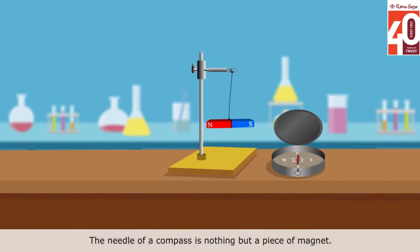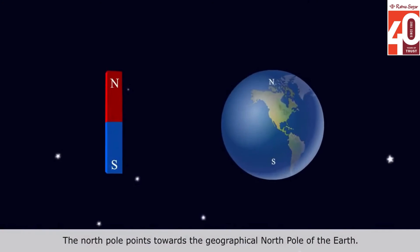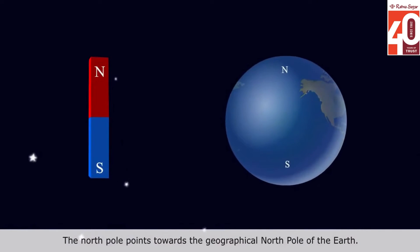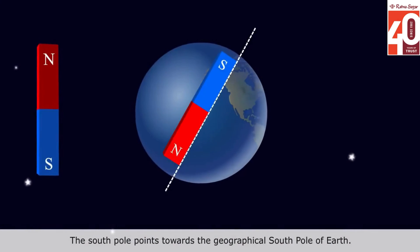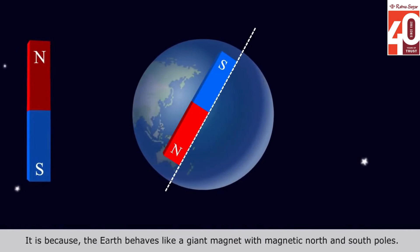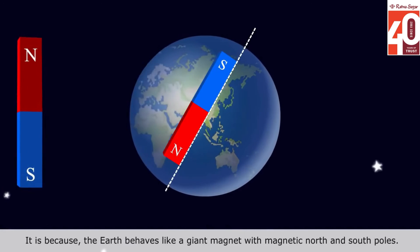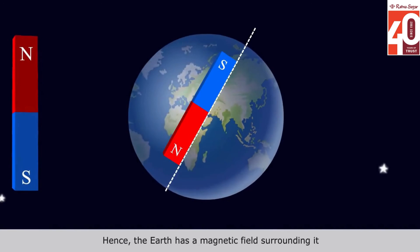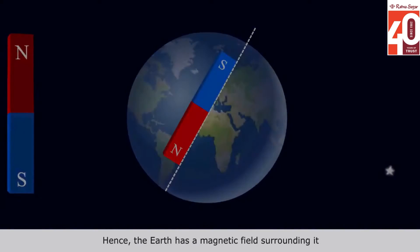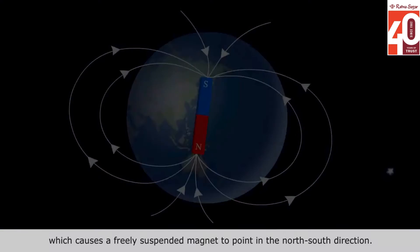The needle of a compass is nothing but a piece of magnet. The North Pole points towards the geographical North Pole of the Earth. The South Pole points towards the geographical South Pole of the Earth. It is because the Earth behaves like a giant magnet with magnetic North and South poles. Hence, the Earth has a magnetic field surrounding it which causes a freely suspended magnet to point in the North-South direction.